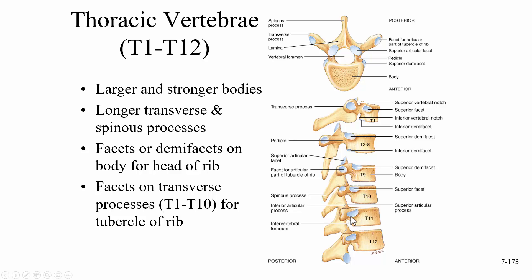These are the costal facets because ribs attach to them. The facet on the body is where the head of the rib will attach. And then on the transverse process, this is where the tubercle of the rib will attach.